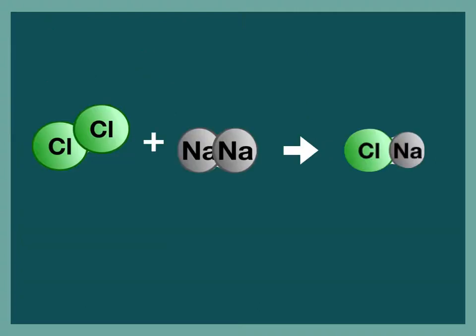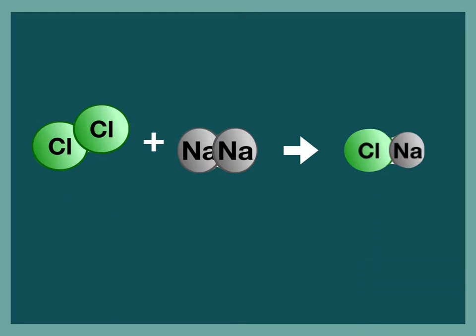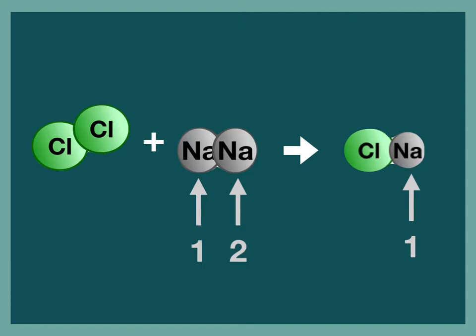As I look at this model, I notice that something is not quite right. There are two atoms on the left but only one chlorine atom on the right. This is true for sodium too — there are two sodium atoms on the left but only one sodium atom on the right. What happened to the other sodium and chlorine? In this model, the equation is not balanced.